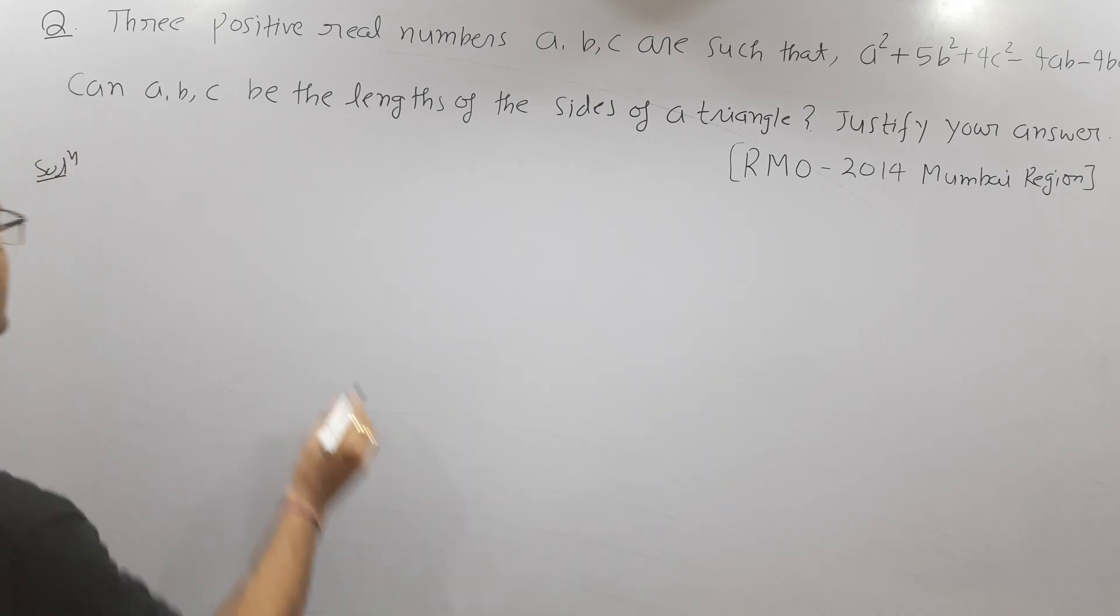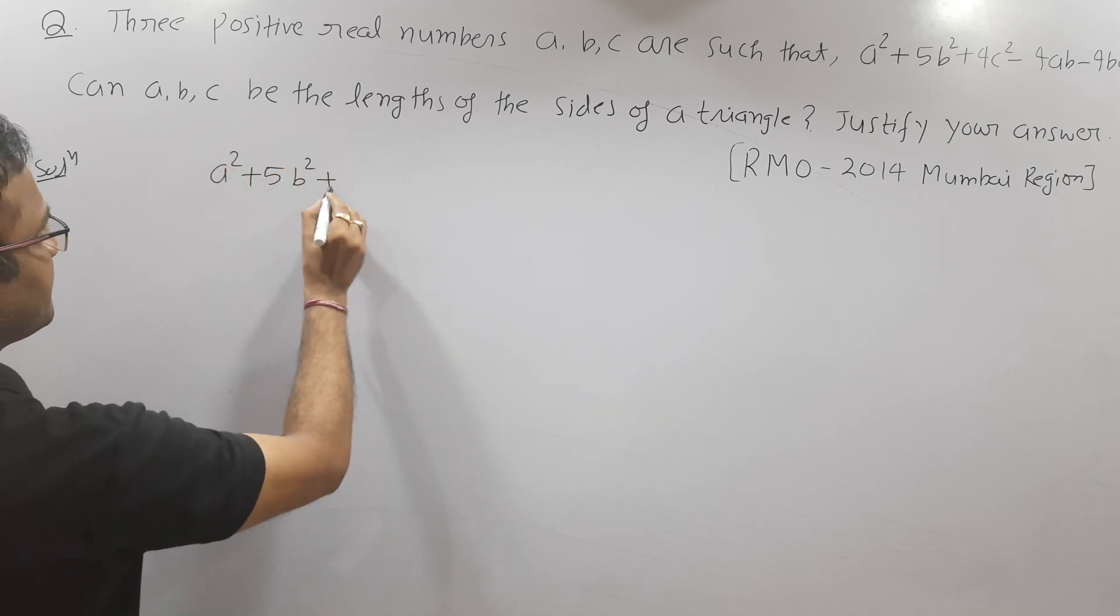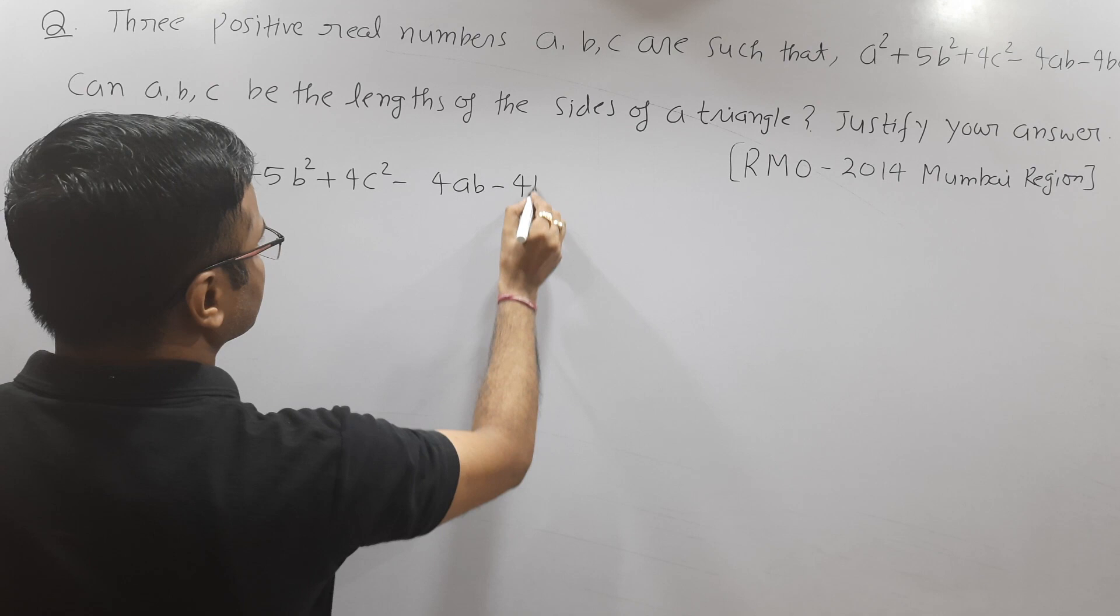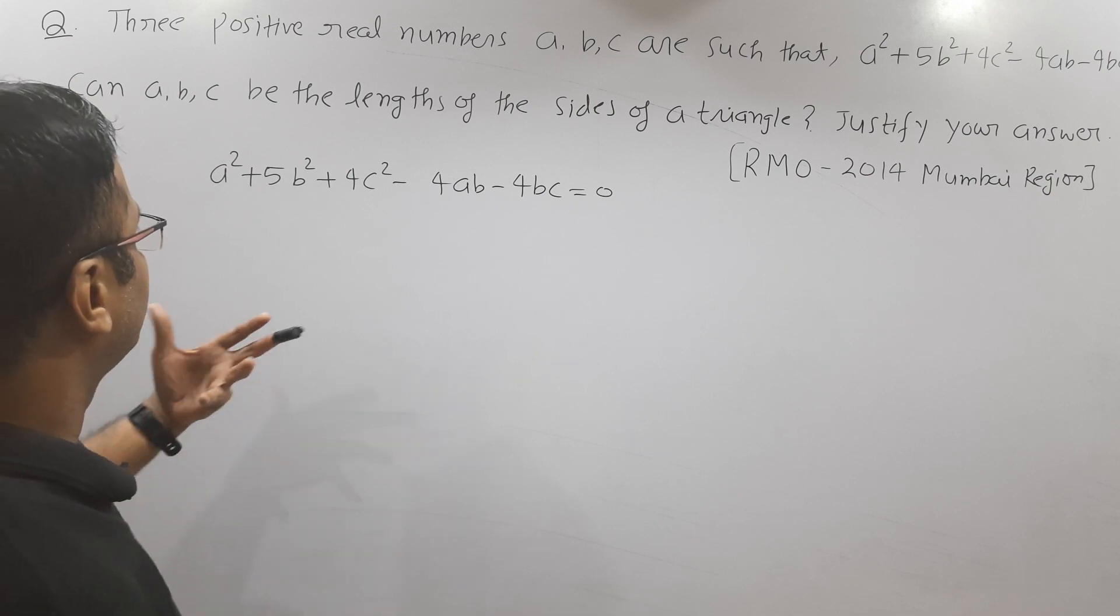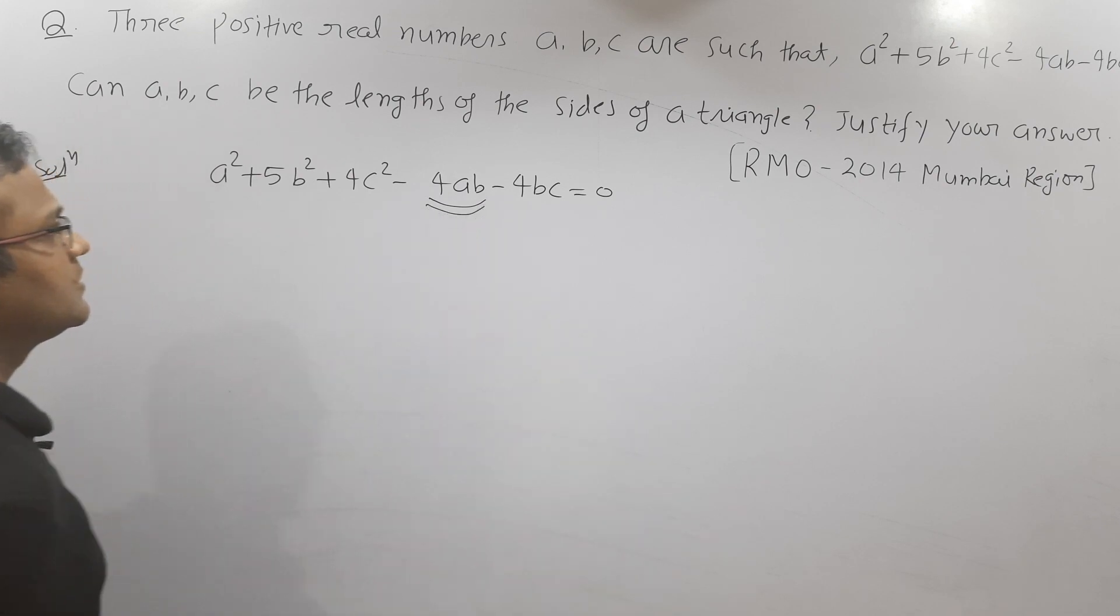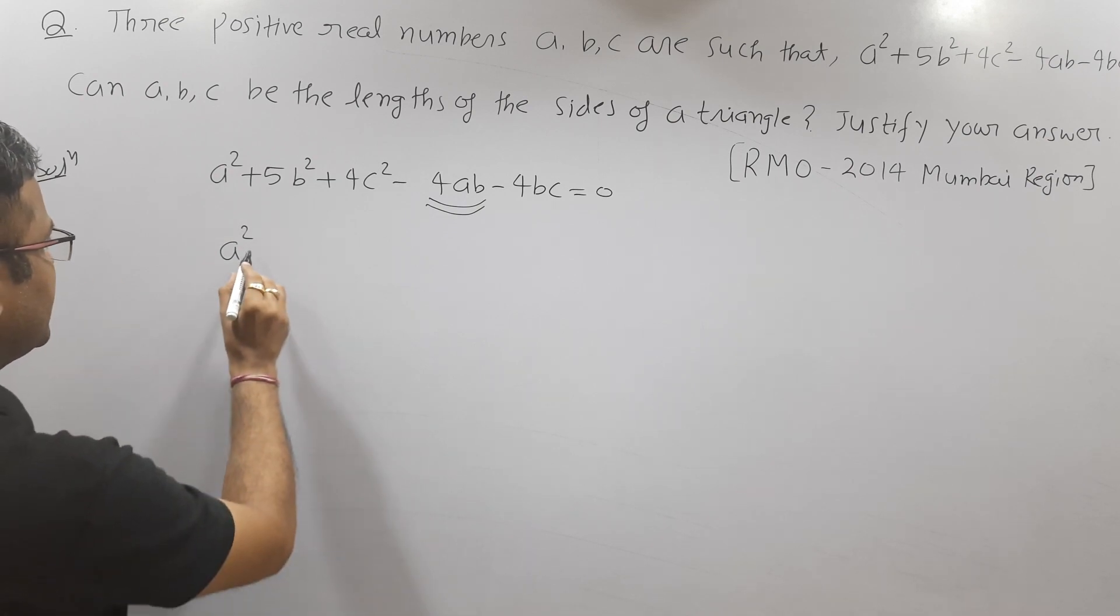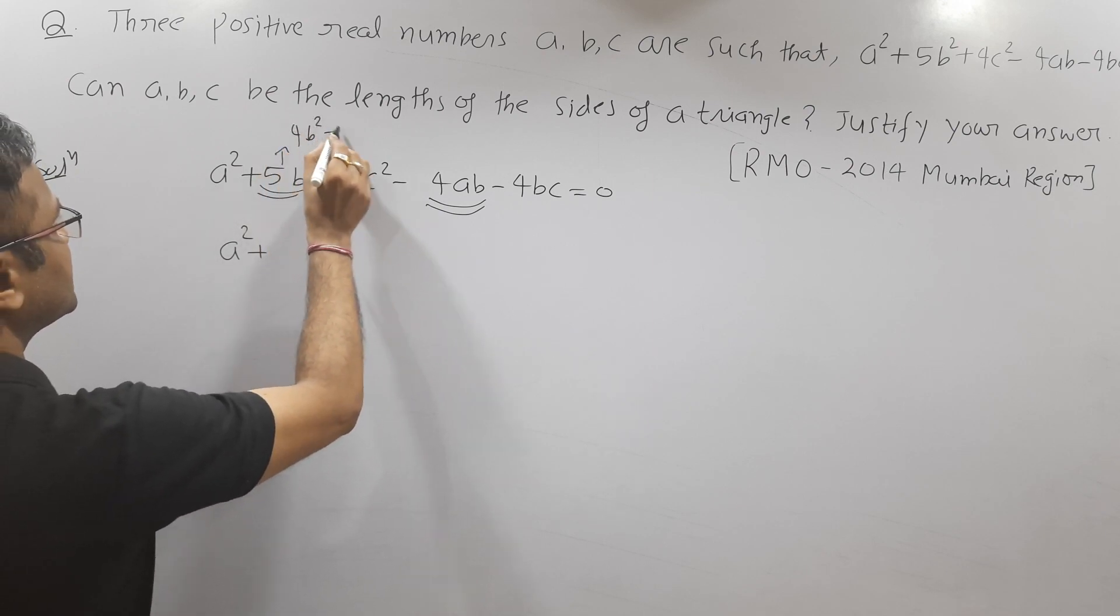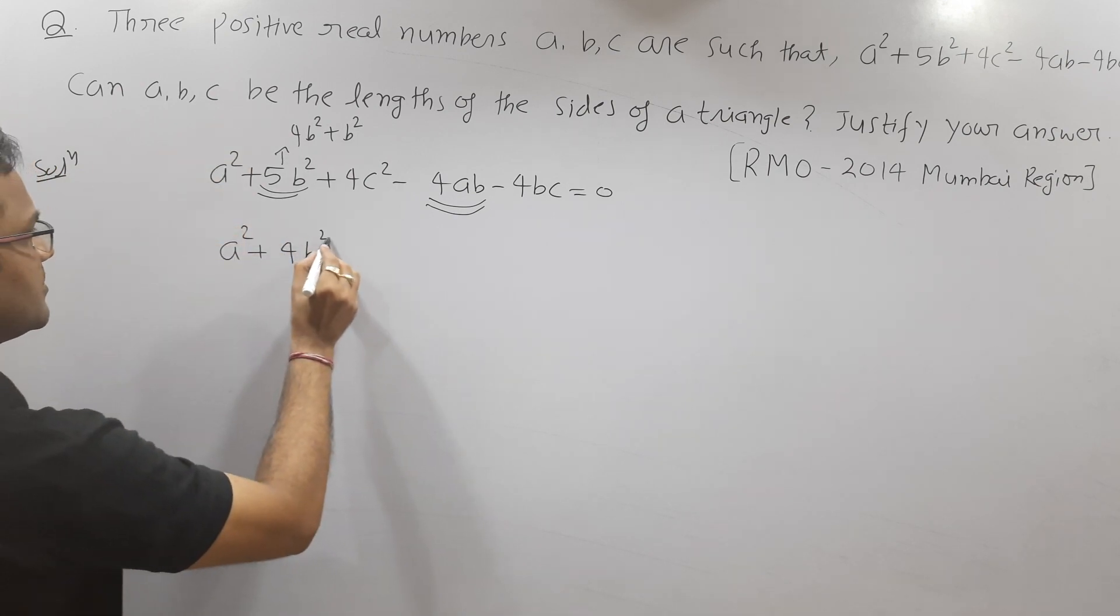The given equation is a² + 5b² + 4c² - 4ab - 4bc = 0. I can break this expression as follows: look at this term, 4ab, so I can write 5b² as 4b² + b². Now write a² + 4b² - 4ab, which is the perfect square of (a - 2b).